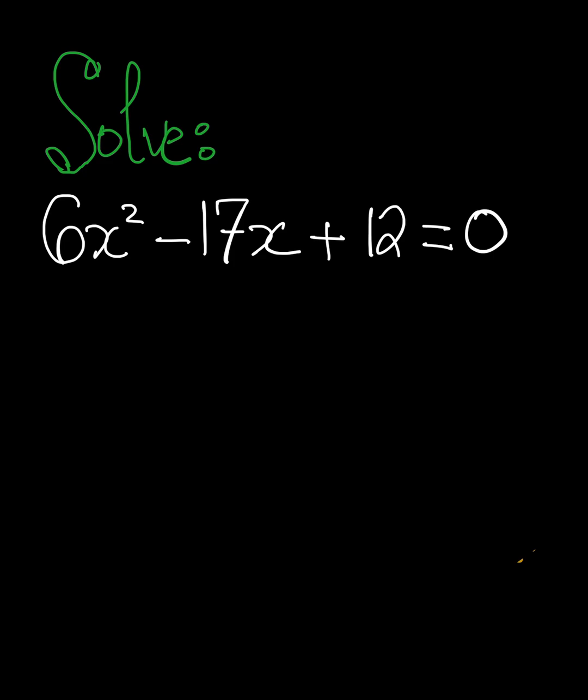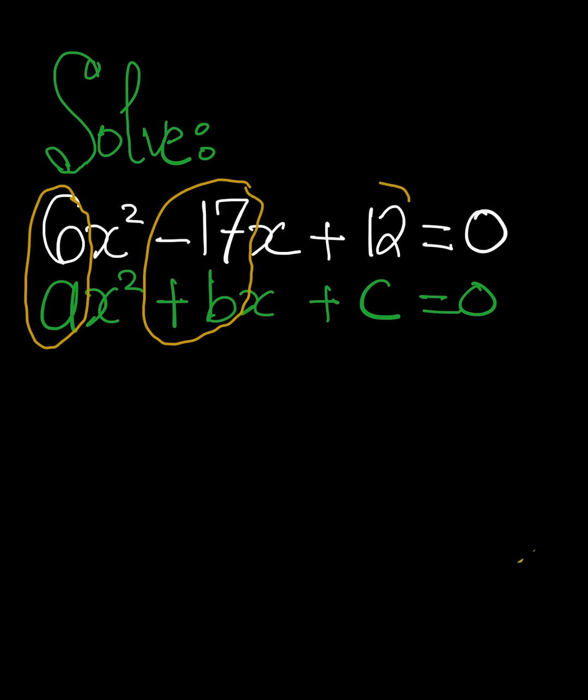The first thing we have to do is to rewrite the quadratic expression ax² + bx + c = 0. And the next thing is to be able to identify our a, b, and c. We can see clearly that this is our a, this is also our b, this is also our c.